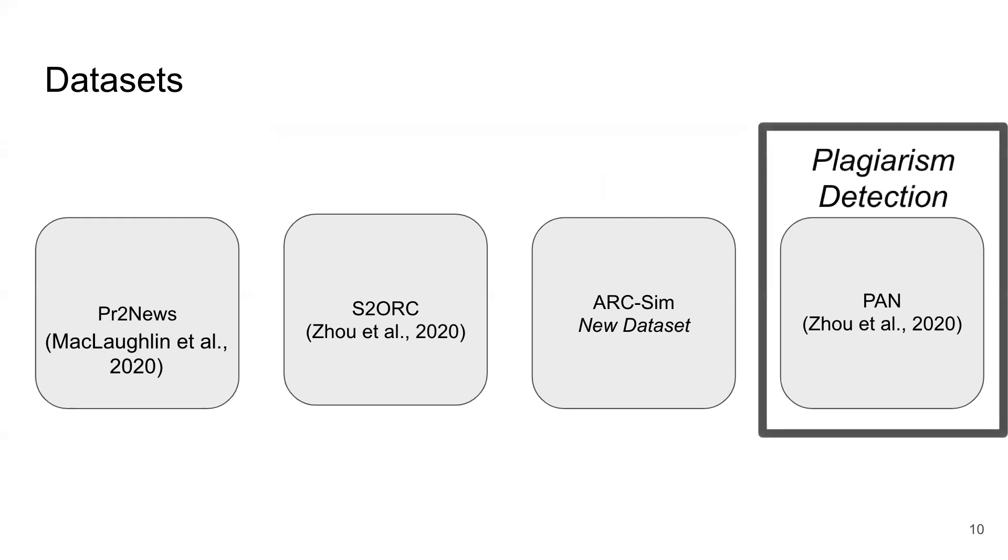Finally, we have the PAN dataset which is a plagiarism detection dataset where the target document has potentially plagiarized some content from the source. This is a synthetic dataset generated by methods such as back translation, sentence shuffling, and word replacement.